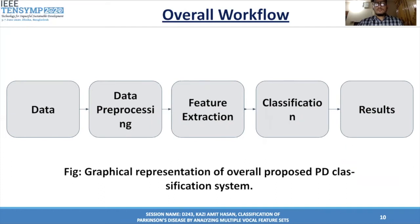This is the overall workflow of our proposed method. First, we load the data, then pre-process it by analyzing correlations and eliminating correlated features. Then we extract features by using Analysis of Variance, also known as ANOVA, and select the top 50 features among the 752 features, just like the base paper. Then we feed those features into different machine learning models to get the accuracy.